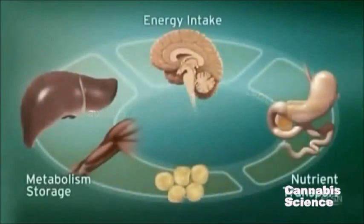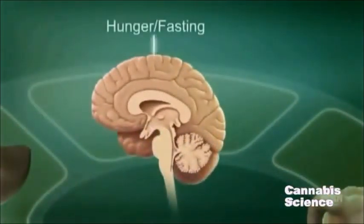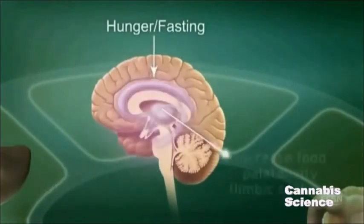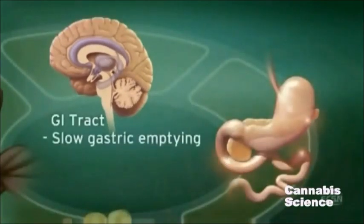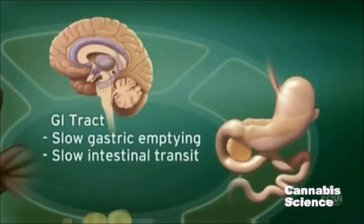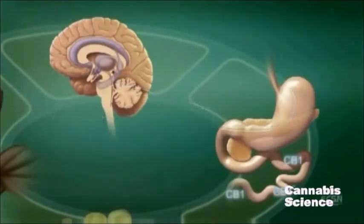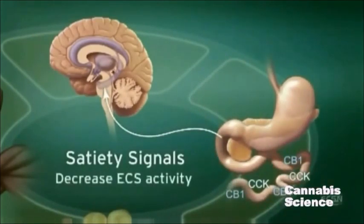Endocannabinoid system activity in the central nervous system regulates food intake. ECS stimulation by hunger and fasting signals stimulates appetite and increases the palatability of food. Endocannabinoids slow gastric emptying and GI transit and appear to stimulate secretion of ghrelin, a neuropeptide that increases appetite and food intake. After eating, cholecystokinin in the duodenum triggers satiety signals, and subsequently ECS activity is decreased through suppression of CB1 expression.